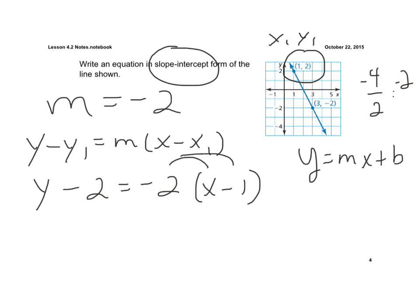So the first thing we're going to do is distribute through to get rid of the parentheses. So I have y minus 2 equals negative 2x. And a negative 2 times a negative 1 is plus 2. And now solve for y. So I'm going to add 2 to both sides.